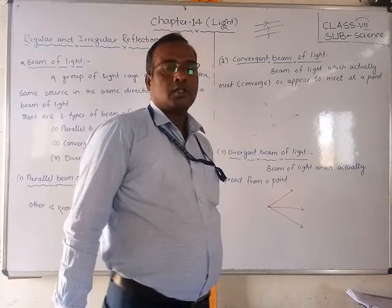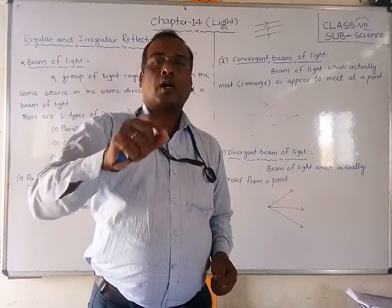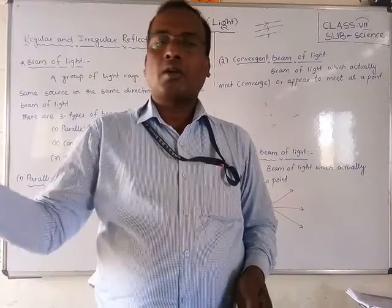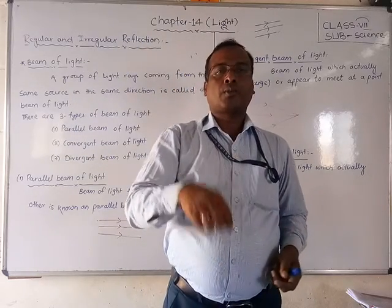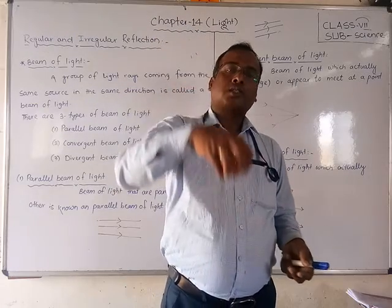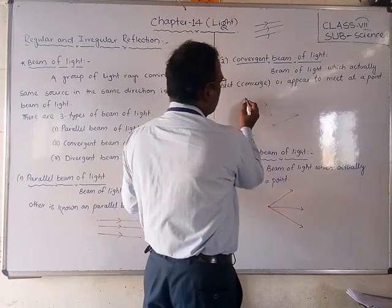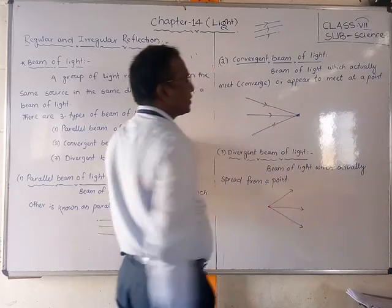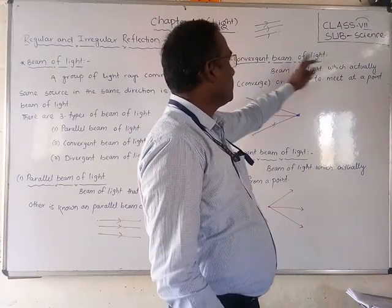What is a convergent beam of light? Convergent means all the rays will meet at one point. You have seen this with a magnifier in sunlight — you keep the magnifier and focus at one point, and the sun rays pass through that point, generating heat, which can even burn things. So convergent beam means all the rays converge to a single point.